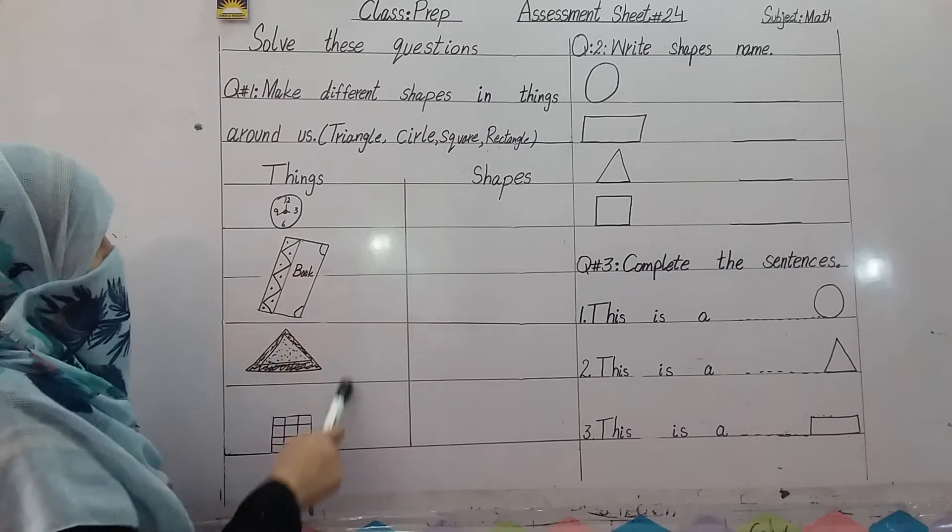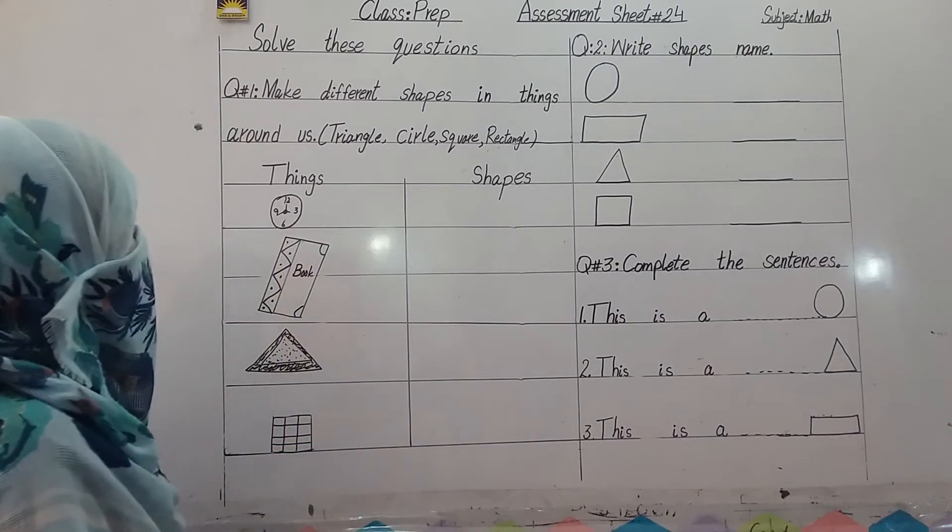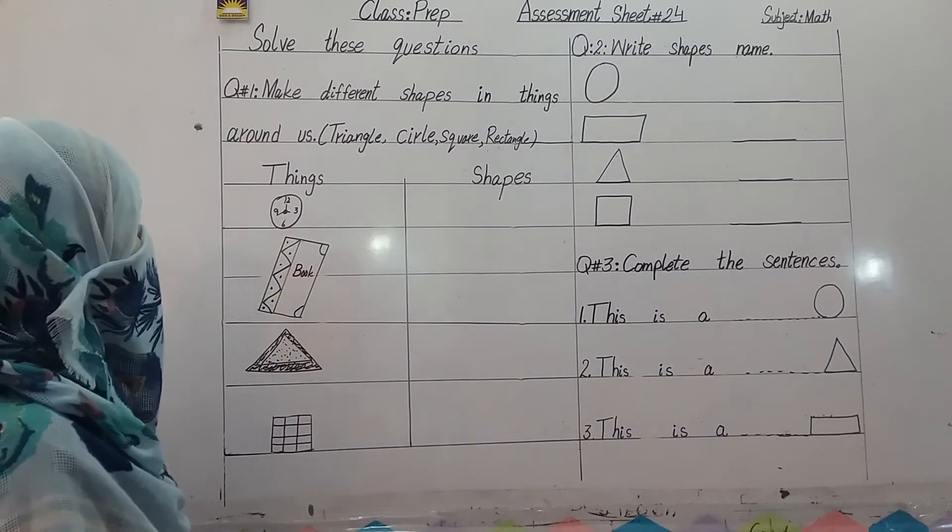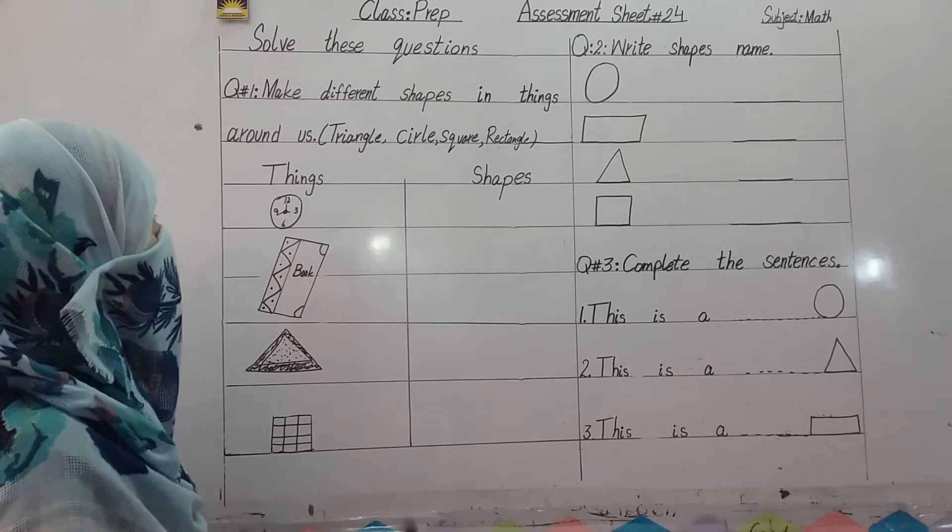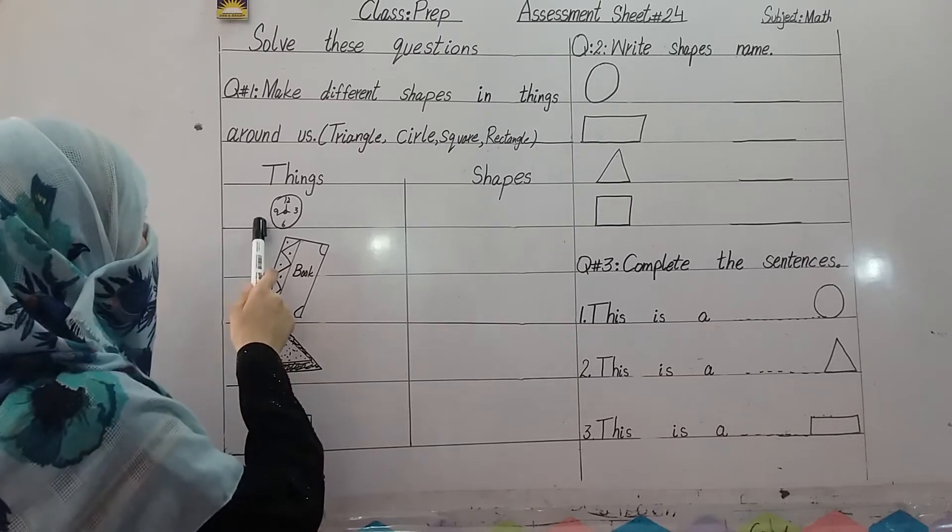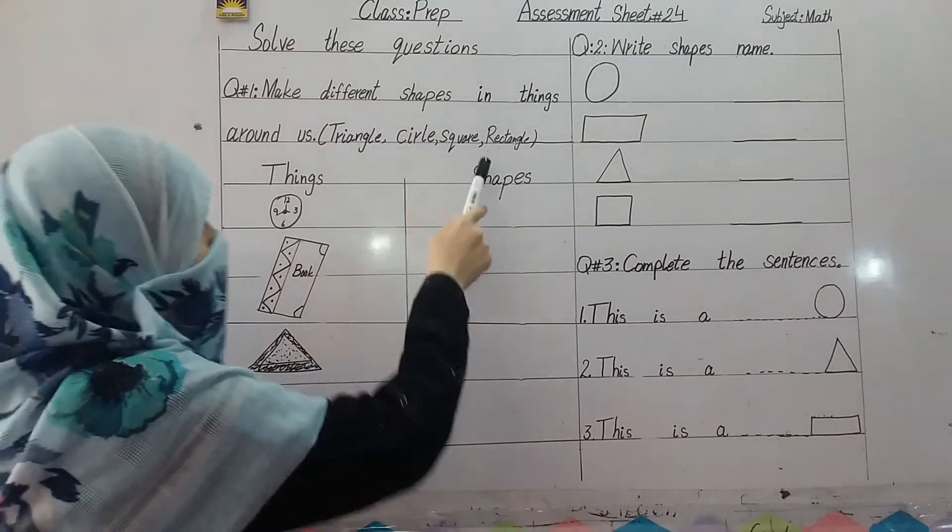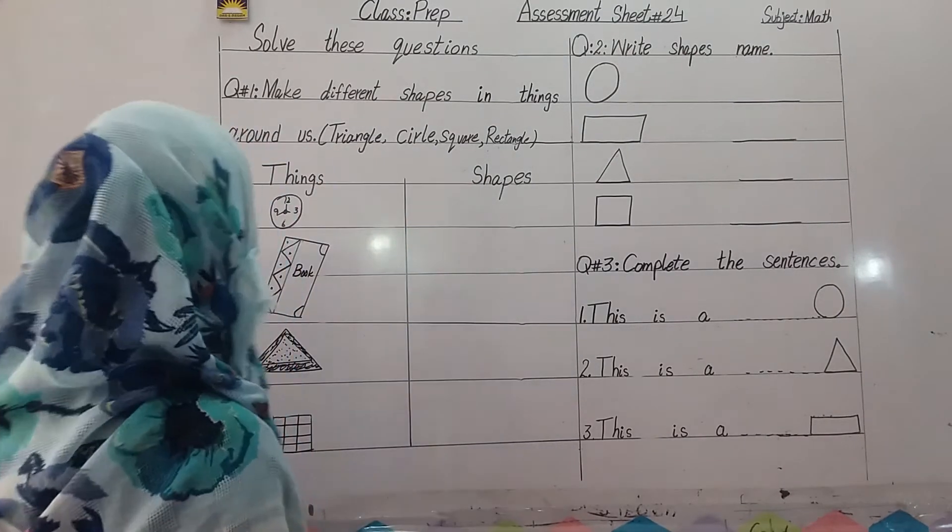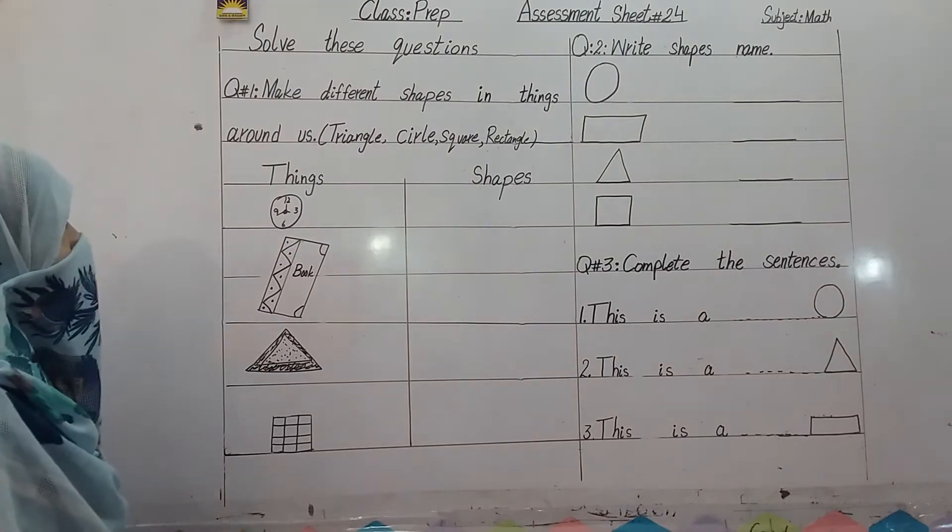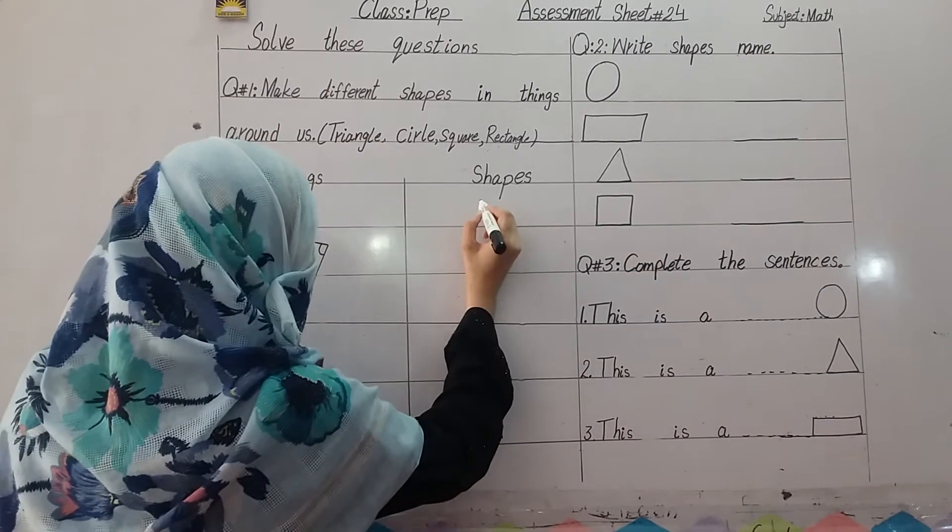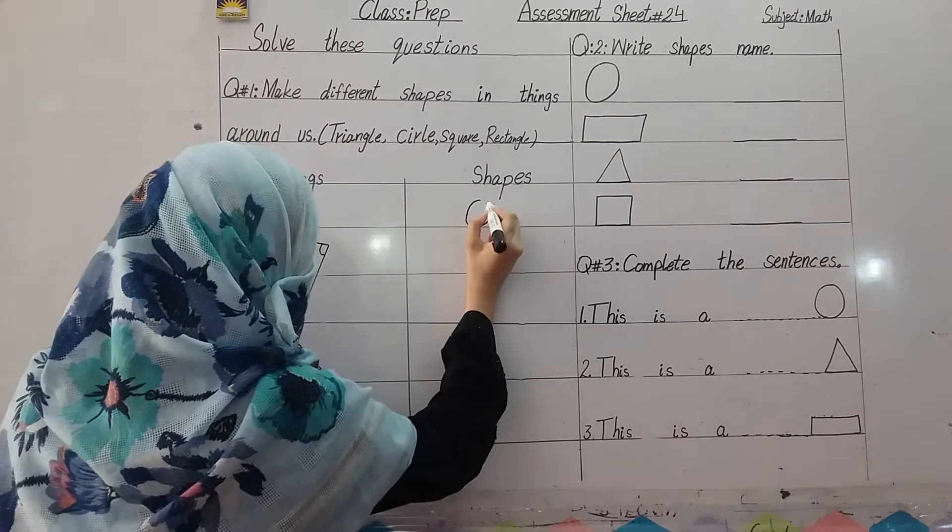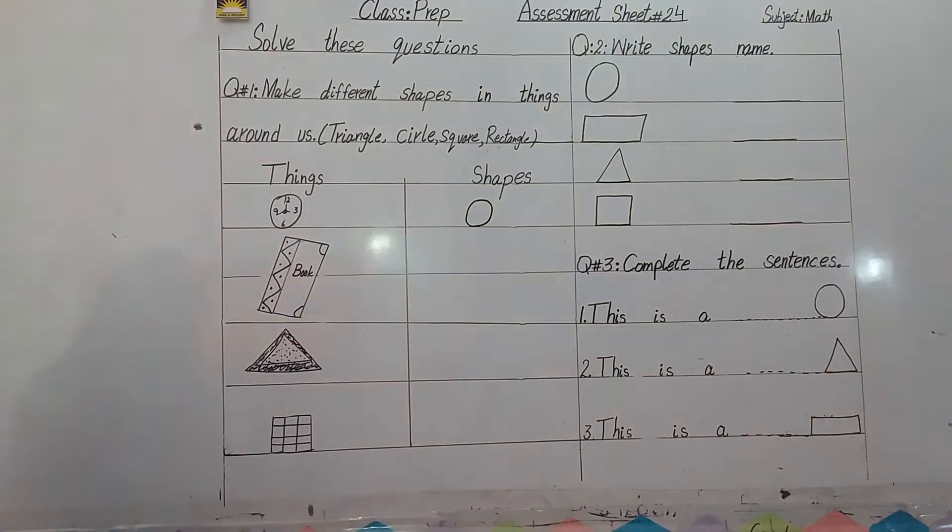Students, you have given different things here. You have to see that your shape, the name of the shape you have made. Like this is called clock, what is the shape of the clock? Look at this, triangle, circle, square or rectangle. So this is the shape of your clock, it is called circle. So you will draw here, circle.